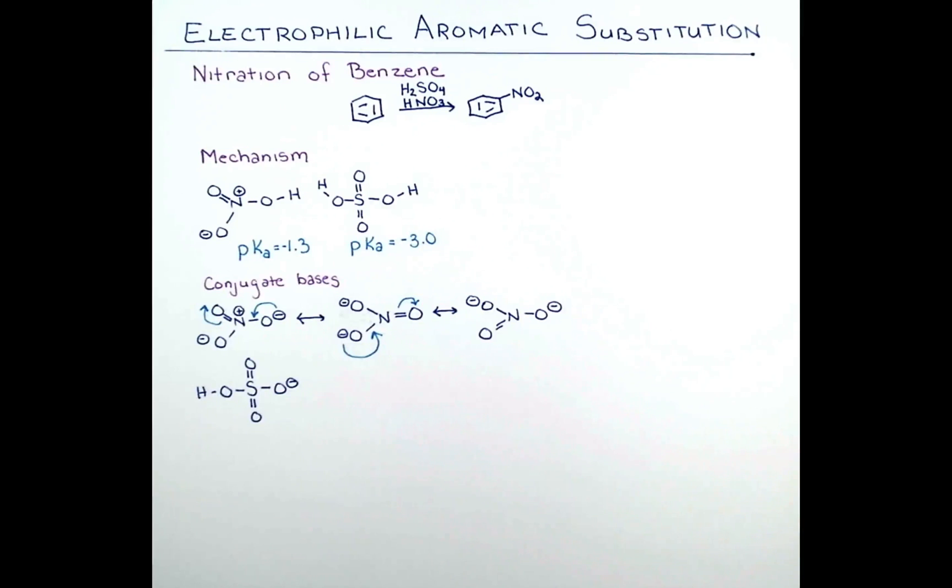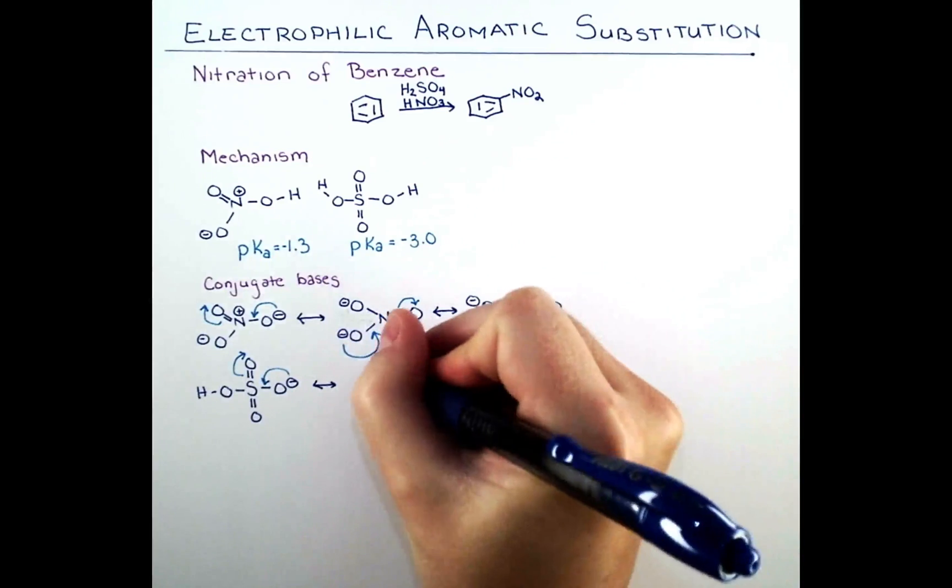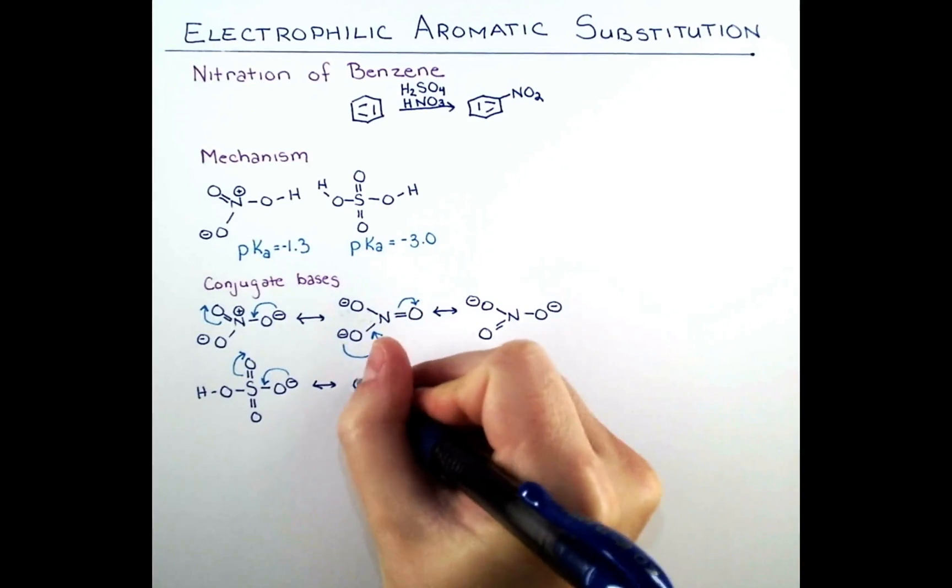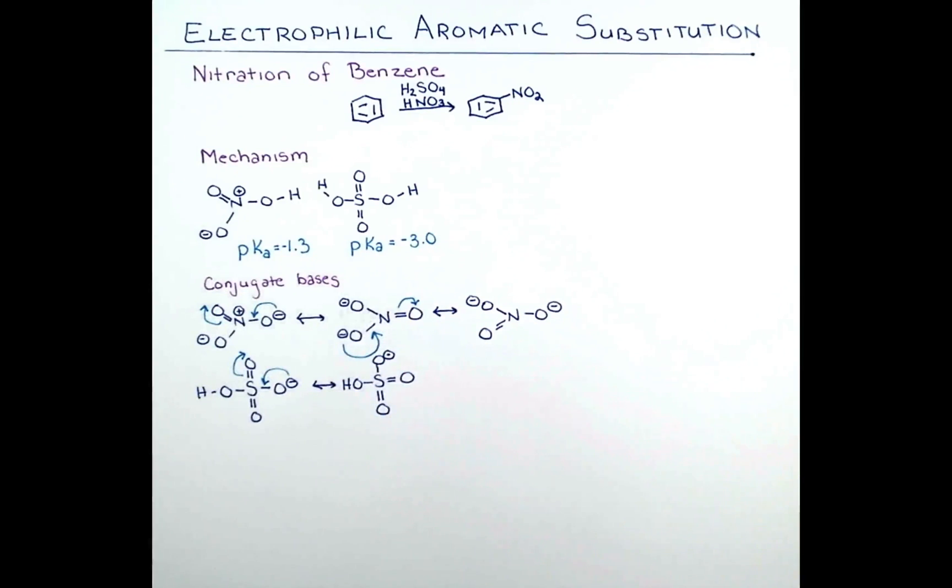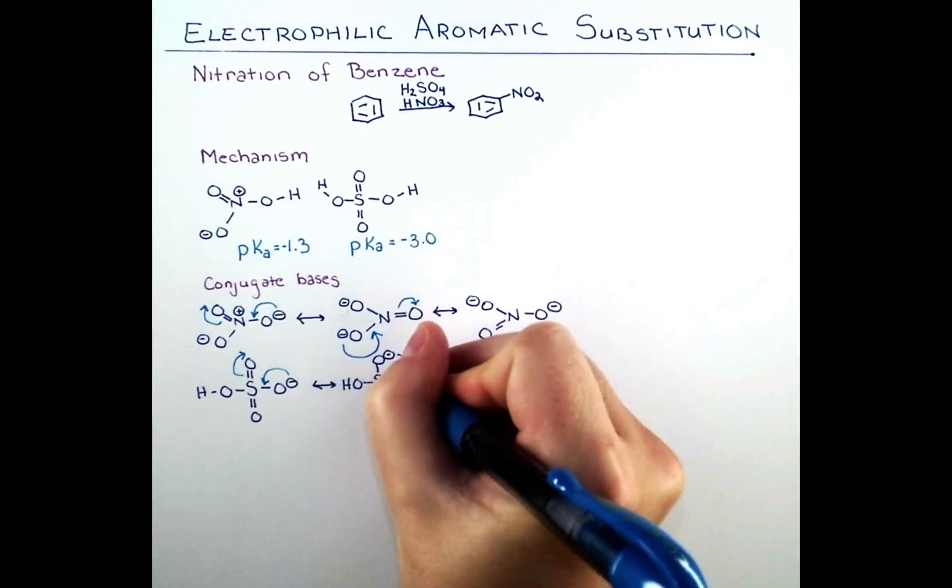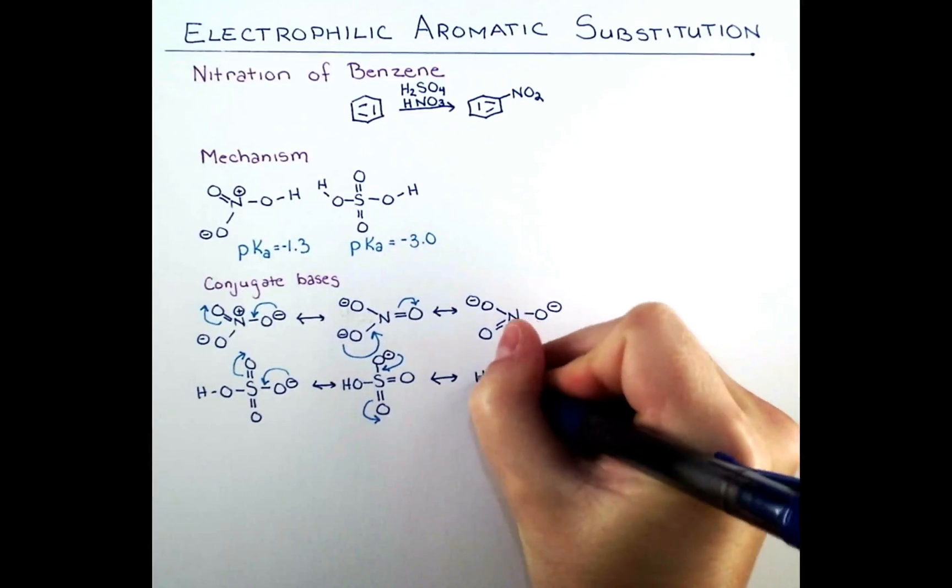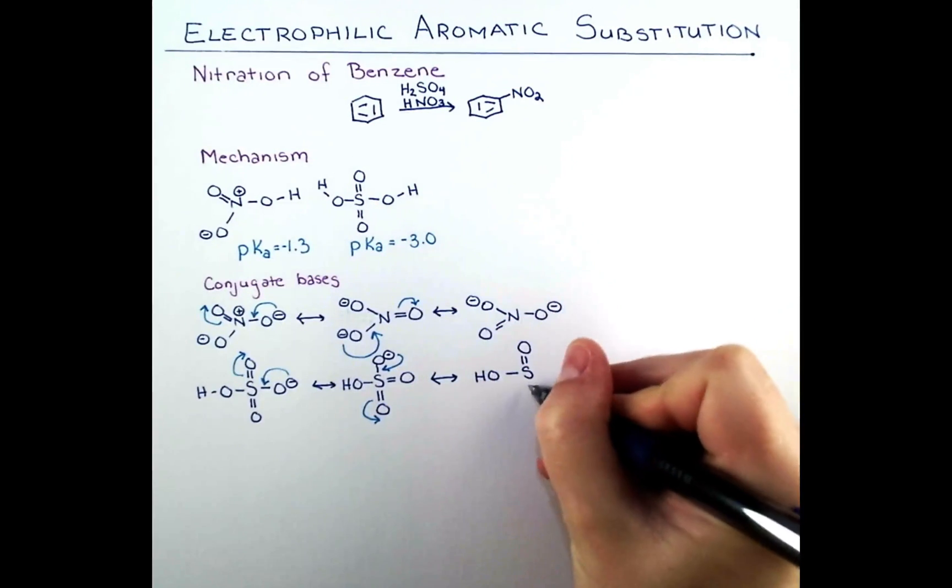Now let's look at the conjugate base of sulfuric acid. Here we're just showing the first proton coming off because that is the one that ionizes completely. The second one does not. In each of these forms, we're going to maintain six bonds to sulfur, but we're going to push electrons so that we have our oxyanions forming sulfur-oxygen double bonds. We can see for the conjugate base of sulfuric acid, we also have three resonance forms.